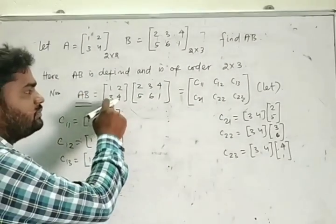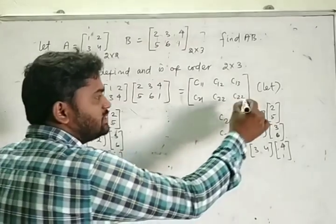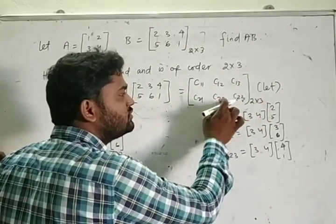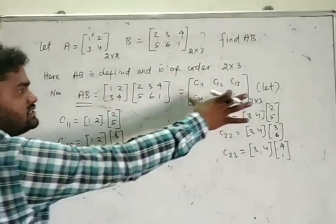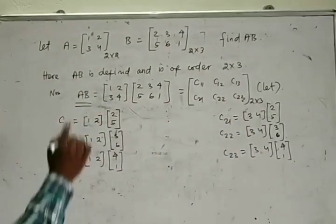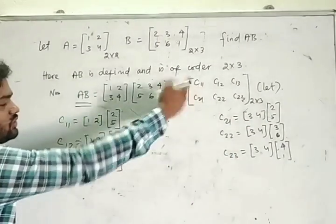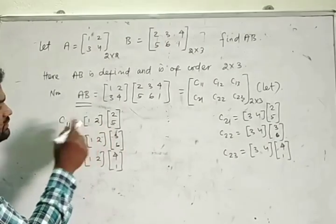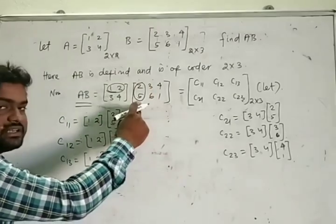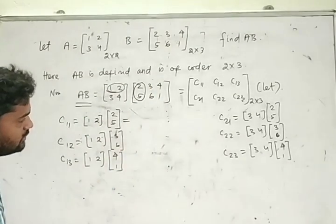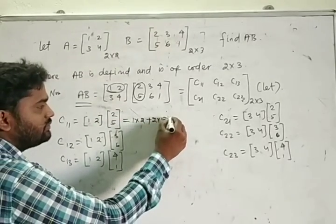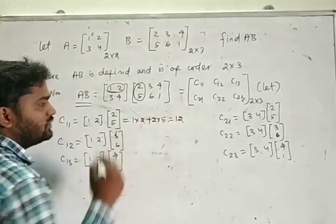Let AB equal C, which is a matrix of order 2×3. The element C11 is found by multiplying the first row of matrix A with the first column of matrix B: 1×2 + 2×5 = 2 + 10 = 12. Similarly, the element C12 is found by multiplying the first row of A with the second column of B: 1×3 + 2×6 = 3 + 12 = 15.